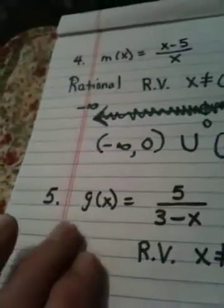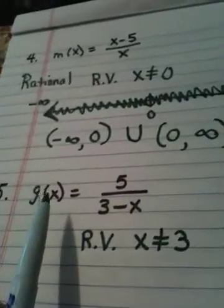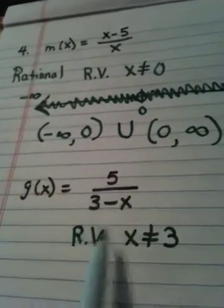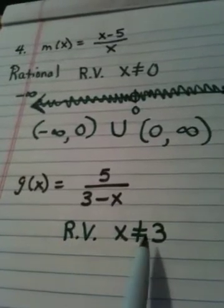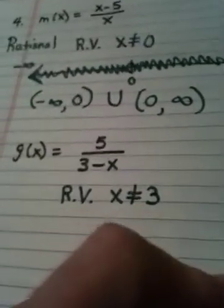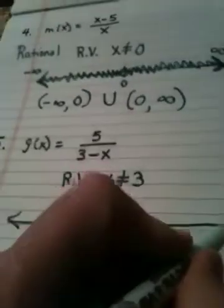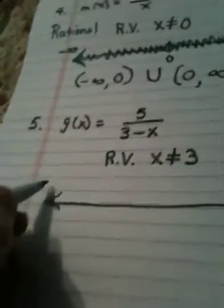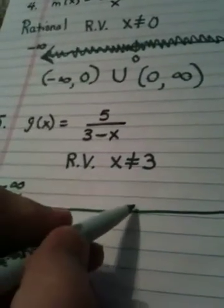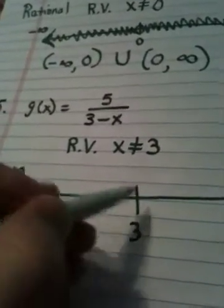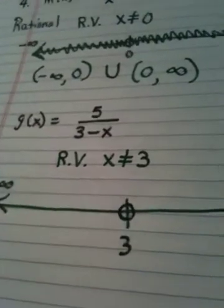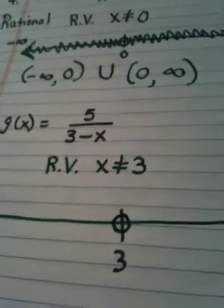So, in problem number five, we do the same thing. Whenever we're finding the domain of a rational function, we first state restricted values. X cannot be three. We go to our number line. This direction is negative infinity. This direction is positive infinity. But this time we find the number three and we throw it out. That's what the open circle means. Throw it out.